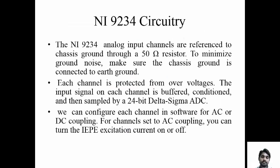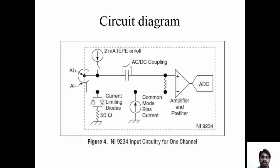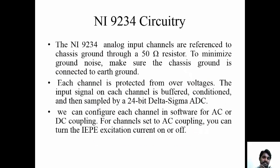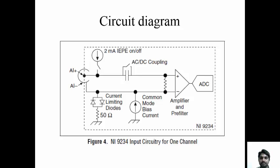The NI9234 circuitry is designed with a 50 ohm resistor connected to ground, and current limiting diodes below that. The advantage of the 50 ohm resistor connected to chassis ground is to minimize ground noise. Analog input channels refer to chassis ground through the 50 ohm resistor by default. Each channel is protected from overvoltages, and the input signal on each channel is buffered, conditioned, and sampled by a 24-bit delta sigma ADC. This converts physical or electrical signals to digital for PC-based applications.